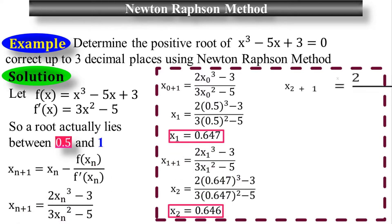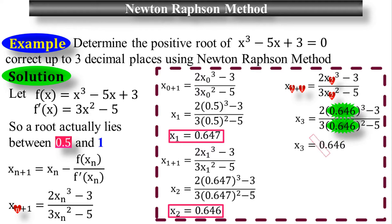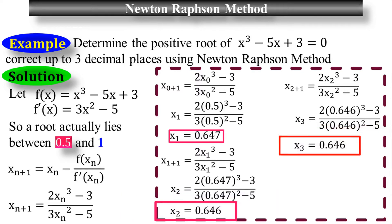Repeat the process again and substitute the value of x sub 2, which is 0.646. This is my x sub 3, the approximate value of the third iteration. You can see that x sub 2 and x sub 3 have similar values. Therefore I am going to stop the process here, because once the last two iterations have similar values, the process has to be stopped.